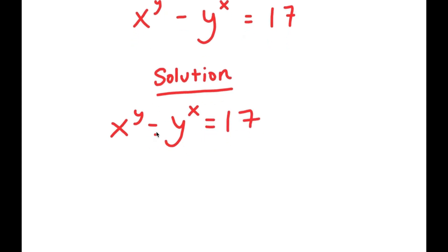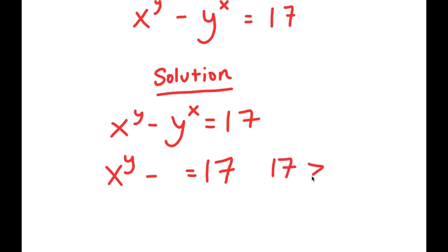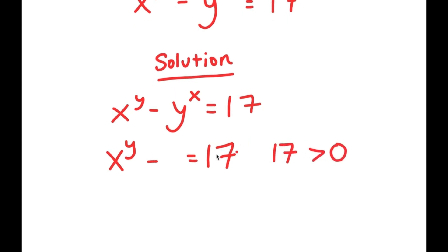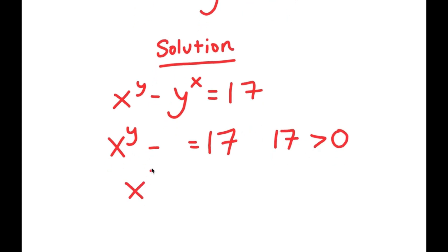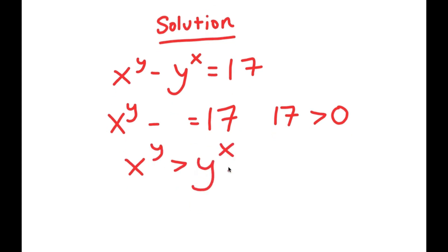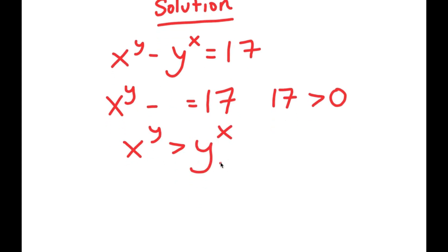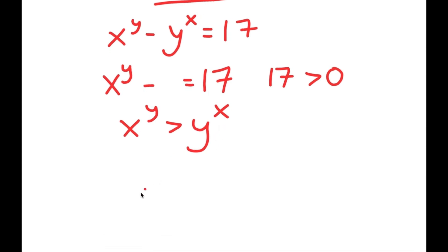Now, to start, just by looking at this equation, what can we infer? Well, notice how we have x to the power of y minus something is equal to 17, and 17 is greater than 0. Meaning, x to the power of y is greater than y to the power of x. And this also must mean that x is greater than y, and y is greater than 0.